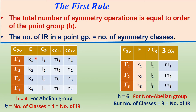For example, in C2V point group, there are four symmetry operations: E, C2, sigma XZ, and sigma YZ. So there are four symmetry operations, therefore the order of the group is equal to 4, H equal to 4.